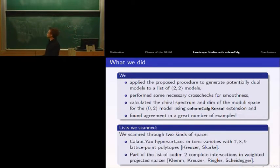What did we do? We applied the proposed procedure to generate models to a large class of tangent bundles on intersections. After performing our transformation, we checked the new model for singularities because the transformed model might have singularities. If this happens, we can't calculate - we'd have to blow up these singularities first.